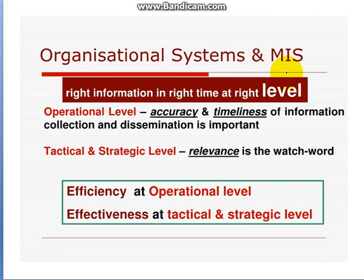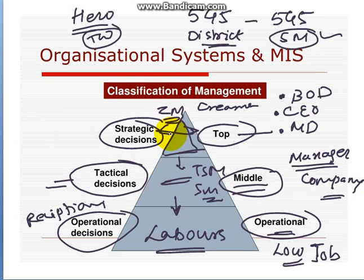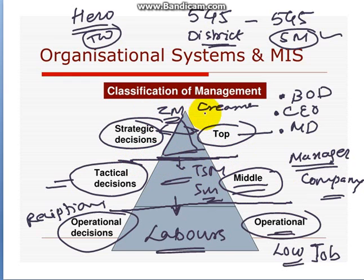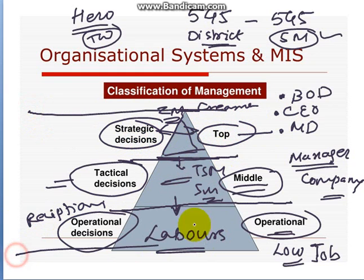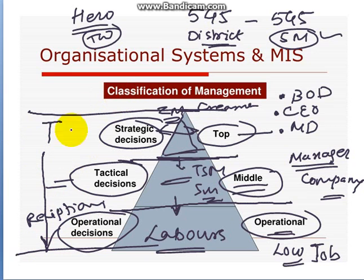Now, the target of MIS is to provide the right information at the right time at the right level. Some access rights should be protected — low-level people should not be able to see what middle-level management can see, and middle-level management should not be able to see what top-level management has. But top-level management should be able to see all three layers, from top to bottom.